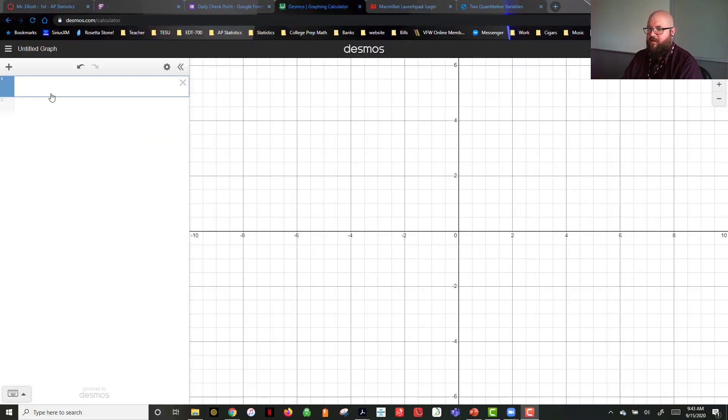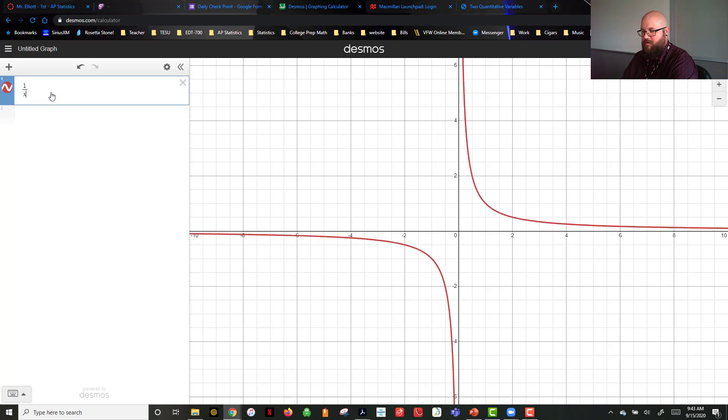Let's make sure we understand how 1/x is going to look. So if we go to desmos.com and do the graphing calculator, I'm just going to type up here in the left hand corner there, take 1 divided by x. And it automatically graphs it for us.